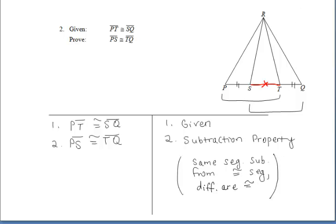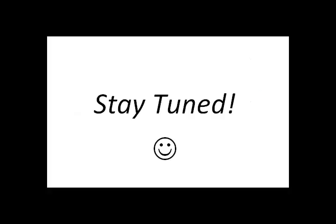We did a couple of examples subtracting the same segment from congruent segments and the same angle from congruent angles. But keep in mind, you can also subtract congruent segments from congruent segments and congruent angles from congruent angles. The proofs will get a little more detailed, but if you'd like to refer to further examples, you can look in your book at section 2.5.